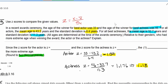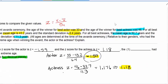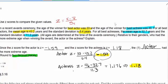Since the z-score for the actor is negative 1.59 and the z-score for the actress is positive 1.18, which one is more extreme? Since this value is more extreme—it's negative, but its absolute value would be a higher number—the actor had the more extreme age.